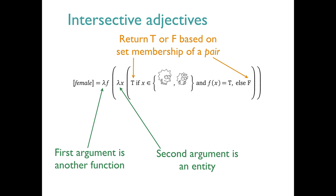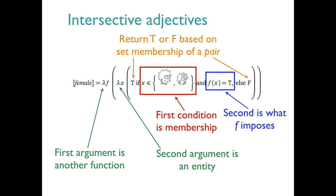The truth conditions first assert membership in the set of all female entities. And the second conjunct does whatever the noun does. For example, if the incoming noun meaning corresponding to F is the set of all school children, then we'll be saying that the X, when it comes in, is both a female entity and a school child entity. The AND part is the intersectivity for these adjectives.